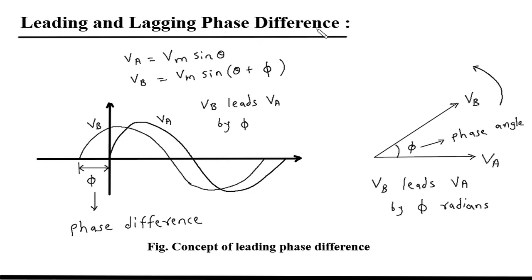Leading and Lagging Phase Difference. Here we can see there are two waveforms: Va and Vb. The starting point of Va is from 0 and the starting point of Vb is from a different position. The difference between the starting points of Va and Vb is called Phase Difference, and Phase Difference is denoted by Phi.